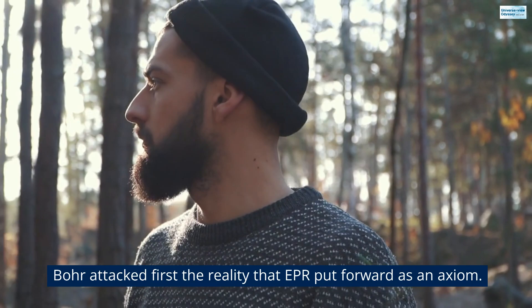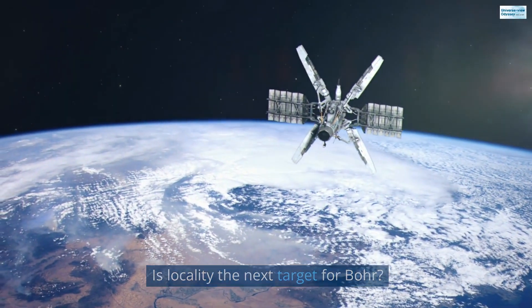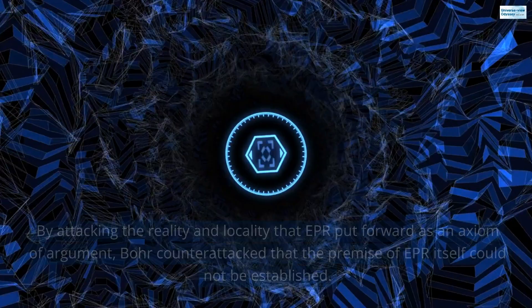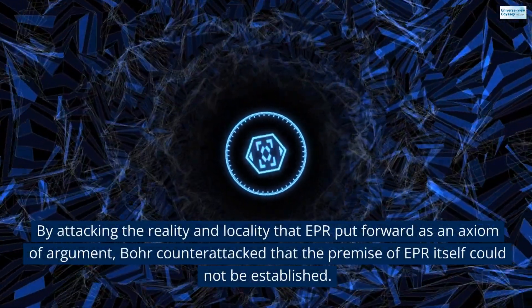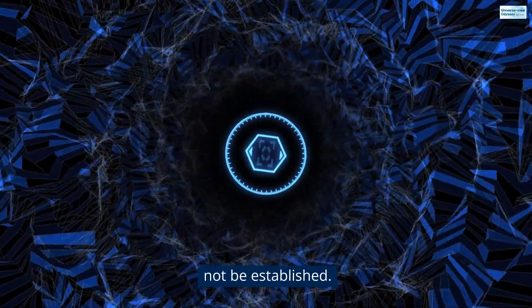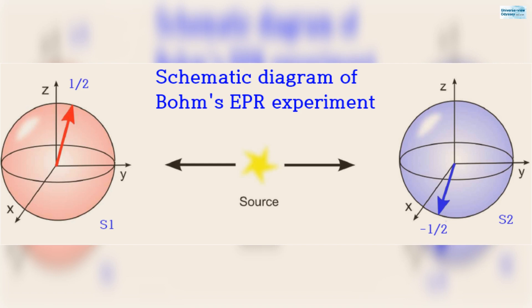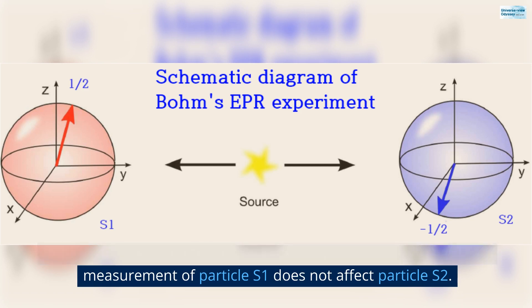Bohr attacked first the reality that EPR put forward as an axiom. Is locality the next target for Bohr? Yes. By attacking the reality and locality that EPR put forward as an axiom of argument, Bohr counter-attacked that the premise of EPR itself could not be established. Bohr also questioned the axiom of locality, which states that EPR's measurement of particle S1 does not affect particle S2.